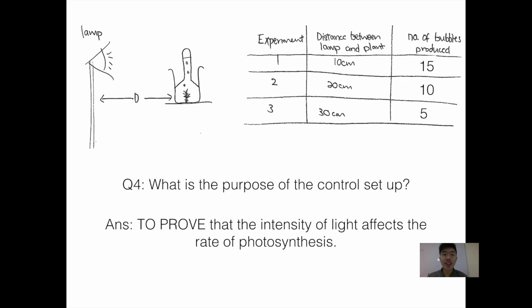The last question I'll be discussing today is: what is the purpose of the control setup? Every time we mention what is the purpose, it is always to prove something. In this case, it is to prove that the intensity of light in the first place does affect the rate of photosynthesis. So the purpose of the control setup is to prove that the intensity of light affects the rate of photosynthesis.